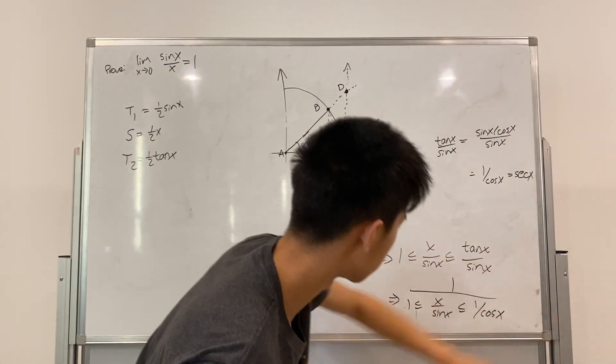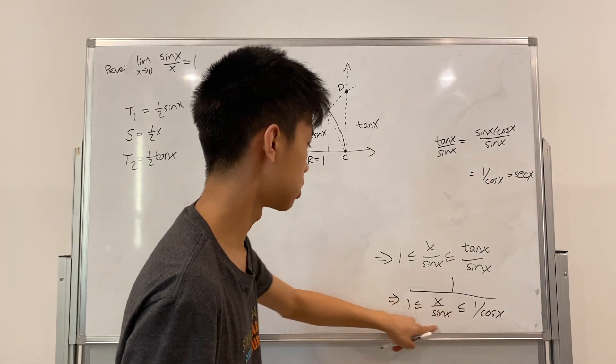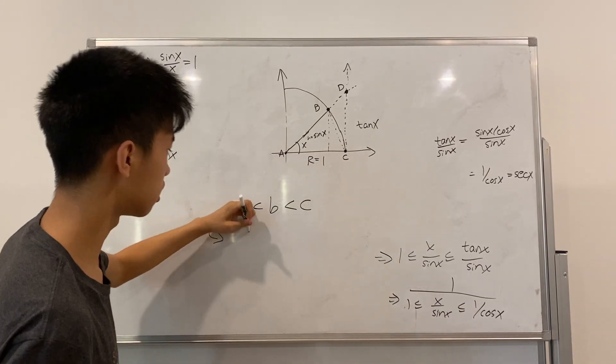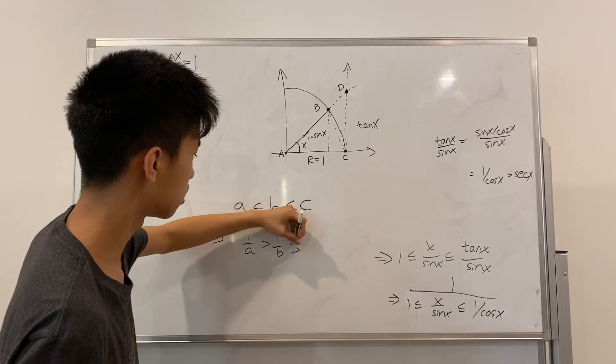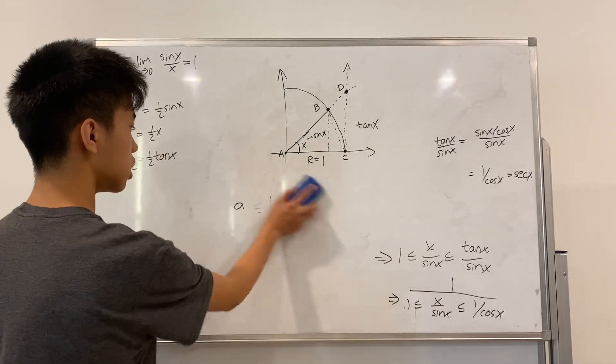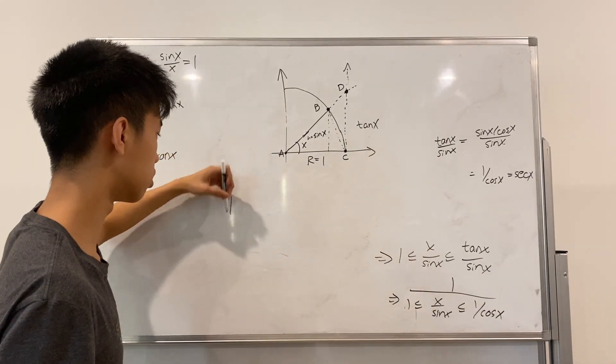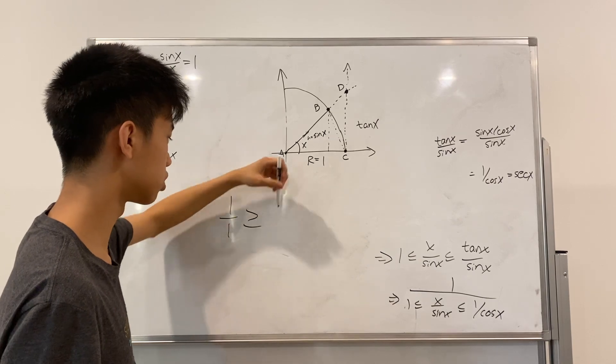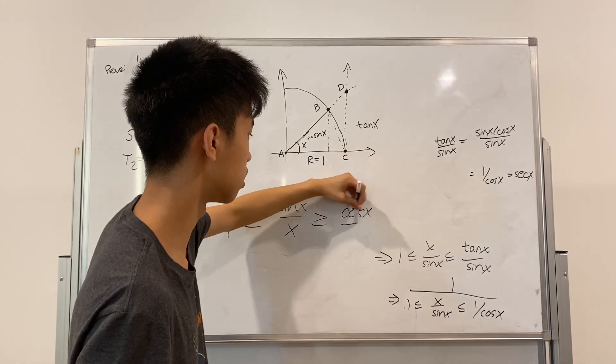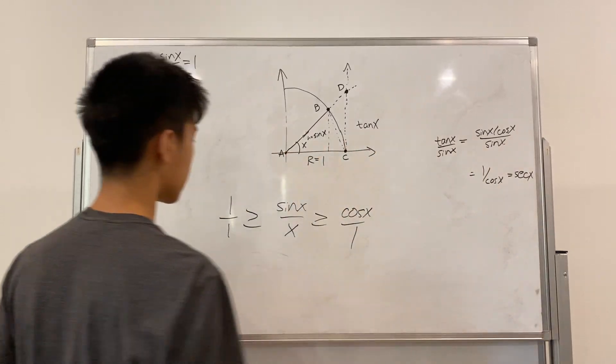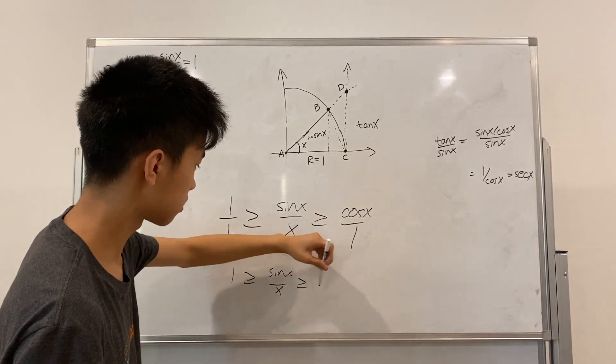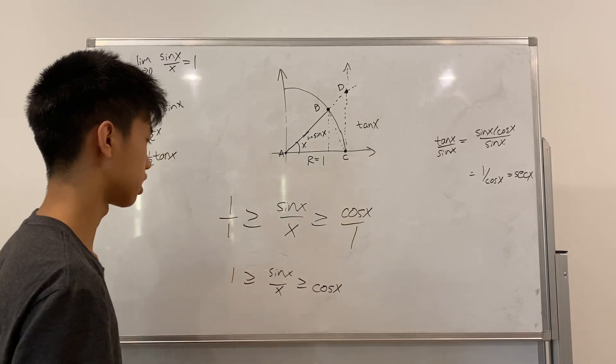Now, let's take the reciprocal of everything. So, we take the reciprocal of A is less than B is less than C. If you reciprocate it, then you get one over A, one over B, one over C. So, the order of all the signs are flipped. So, here is no difference. So, here we'll have one over one is greater than or equal to sine of X over X is greater than cosine of X over one. So, now, we get that sine of X over X is in between cosine X and one.